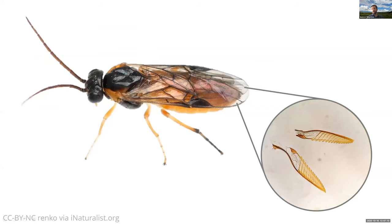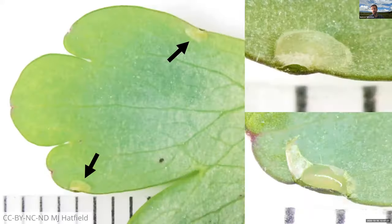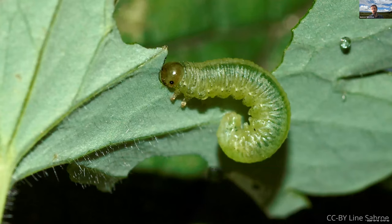Sawflies are the non-stinging relatives of bees, wasps, and ants. Instead of a needle-like ovipositor or sting, they have a saw-like ovipositor that they use to cut slits into plant tissues where they lay their eggs. Here's a columbine leaf showing a couple of slits on the leaf margins that form a little pocket where the egg is inserted. Those eggs hatch most of the time into these green caterpillar-like creatures, not too dissimilar from moths and butterflies, and most of them feed externally on plant leaves.